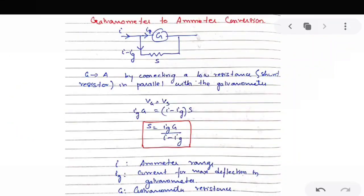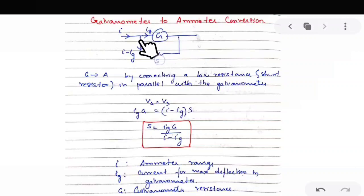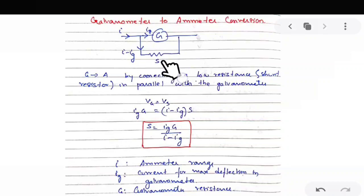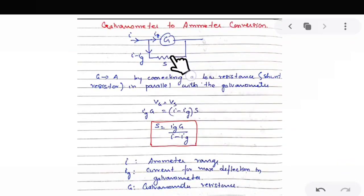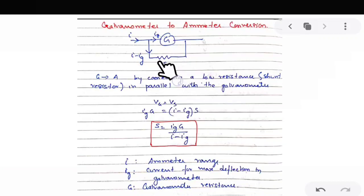To convert a galvanometer into an ammeter, we connect a low resistance called a shunt resistance S in parallel across the galvanometer resistance G. Because when a low resistance is connected in parallel across a high resistance, the overall resistance becomes low. This converts the high-resistance galvanometer into the low-resistance ammeter.